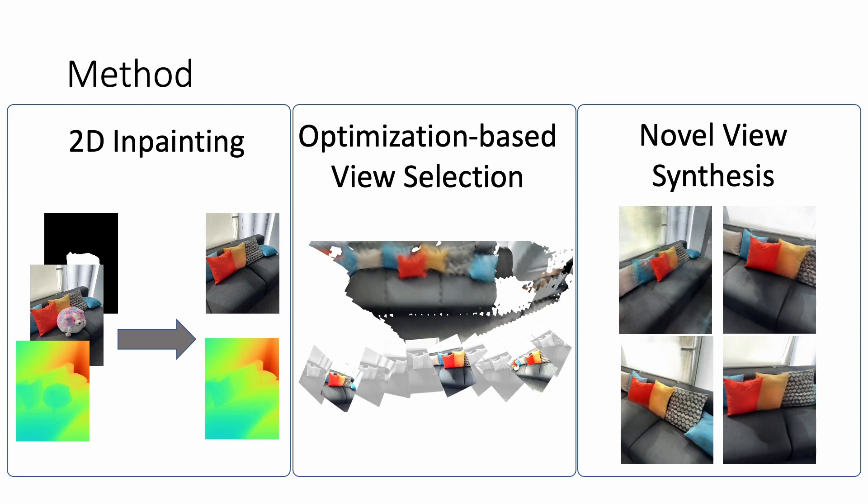We therefore design an optimization-based view selection scheme that selects consistent views along the trajectory. Finally, we use the trained neural radiance field to render novel views where the object has been consistently removed.